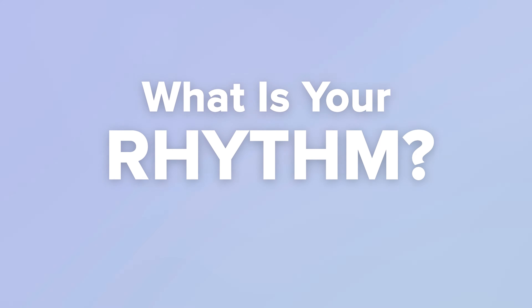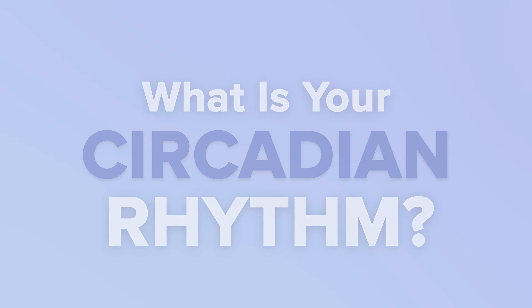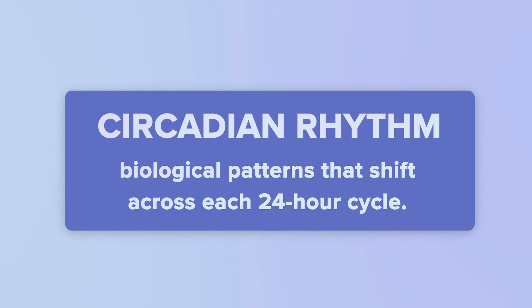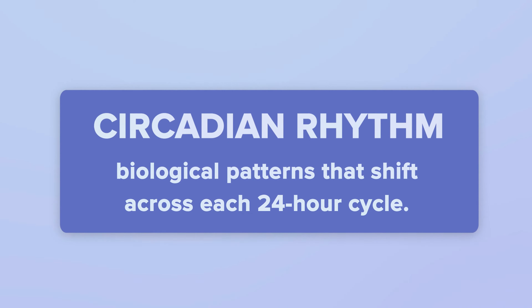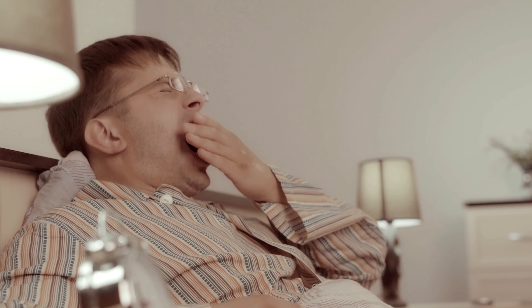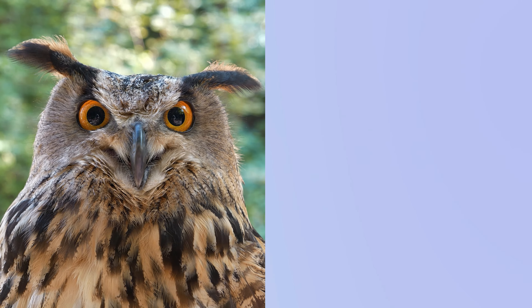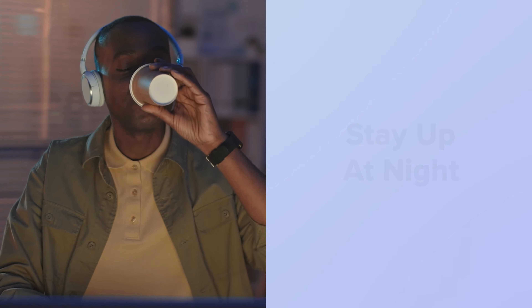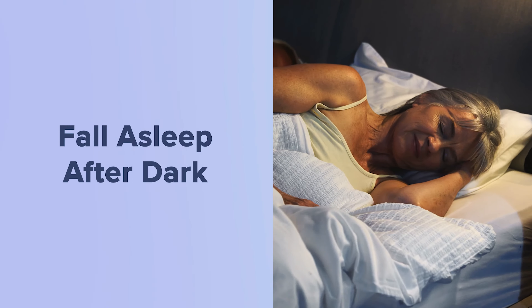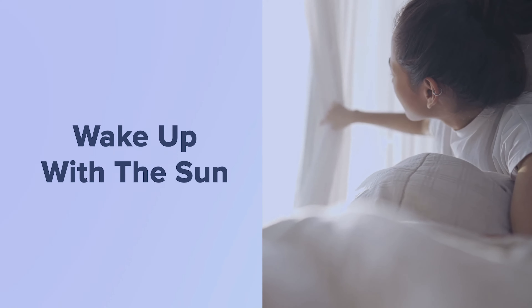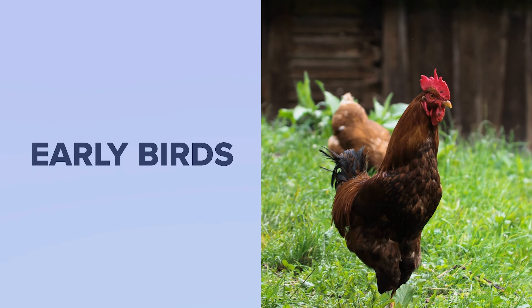So what is your rhythm, or your circadian rhythm? Circadian rhythms are biological patterns that shift across each 24-hour cycle. The most noticeable circadian rhythm is the sleep-wake cycle, which determines a person's level of sleepiness or wakefulness throughout the day and night. Not everyone's circadian rhythm is the same. For people who are night owls, a normal daily rhythm involves staying up at night and sleeping late in the morning. Other people fall asleep soon after dark and are up with the sun — these people are known as early birds or larks.